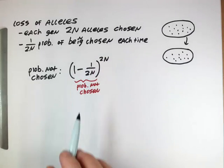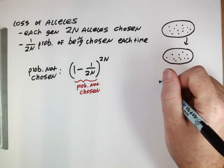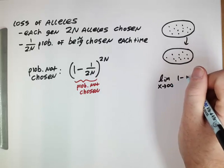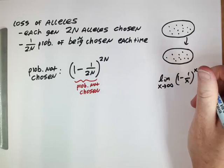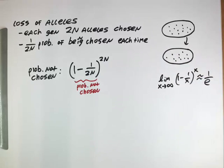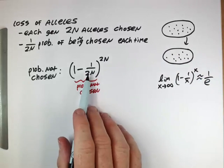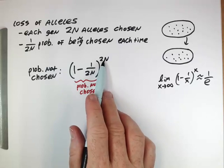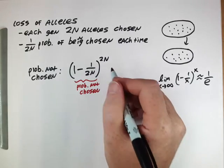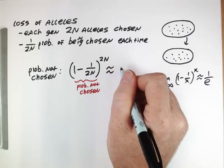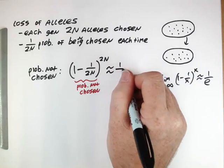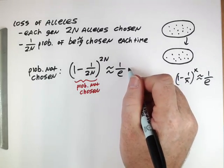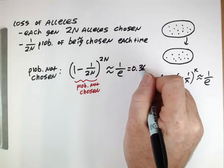Now you've actually seen an equation kind of like this before when you took your calculus class. Let's just go back to calculus. The limit as x goes to infinity of 1 minus 1 over x raised to the power x ends up being 1 over e. And that's what we have here, right? 1 minus 1 over 2n raised to the power 2n. If the population becomes large, that's exactly the same thing as this, which means this probability for any given allele of not being chosen in a generation is 1 over e. E is 2.7 something, and so this number is going to end up being about 0.368.